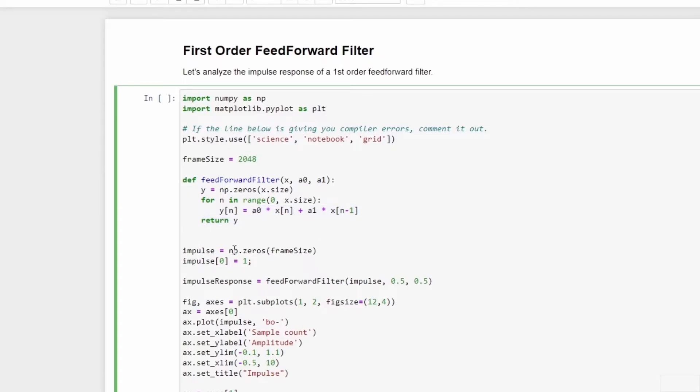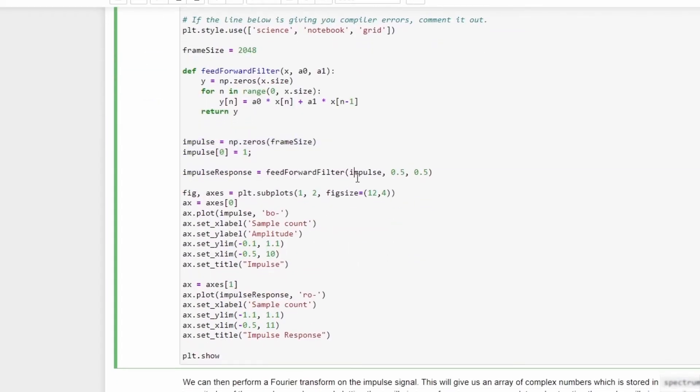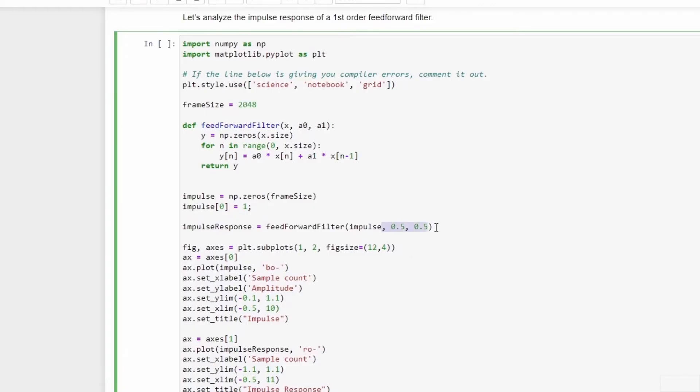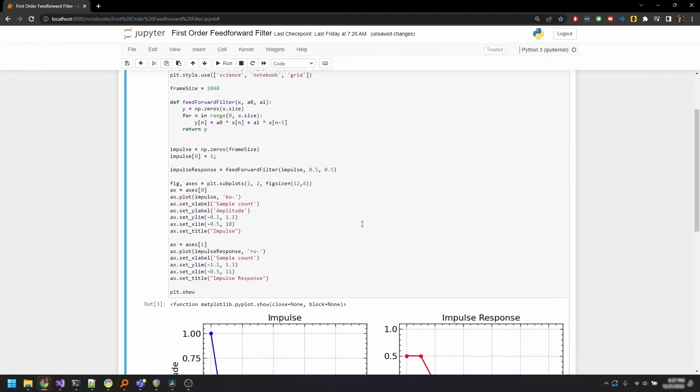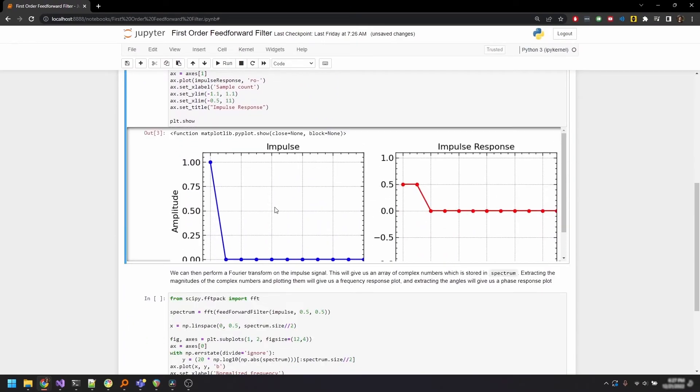All we're doing here is creating an impulse signal, feeding that impulse signal through the feedforward filter function, and getting the impulse response out, and then plotting both the impulse and the impulse response on two separate graphs. When a0 and a1 are 0.5 each, we see a familiar response in the impulse signal.